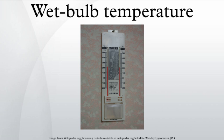Thermodynamic wet bulb temperature is the temperature a volume of air would have if cooled adiabatically to saturation by evaporation of water into it, with all latent heat being supplied by the volume of air. The temperature of an air sample that has passed over a large surface of liquid water in an insulated channel is the thermodynamic wet bulb temperature — it has become saturated by passing through a constant pressure, ideal, adiabatic saturation chamber.